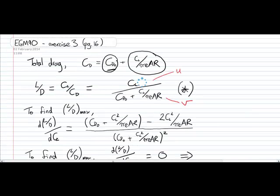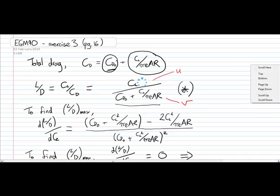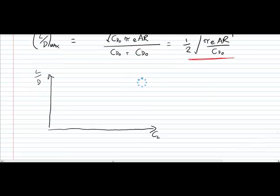Remember, our expression right back up at the top for L upon D was this one here. In fact, I think I've missed a squared off there somewhere. In fact, I have a squared term there and there, which need to be added in. But if we were to plot that L upon D function, we're going to get something that looks like this.